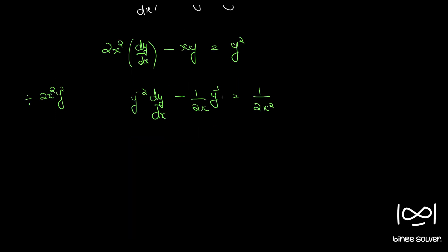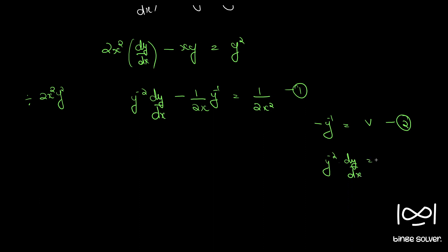This is now in Bernoulli's equation form. We use the substitution: minus y raised to minus 1 equal to v — call this equation 2. Differentiating both sides of equation 2 with respect to x, we get y raised to minus 2 into dy by dx equal to dv by dx — call this equation 3.